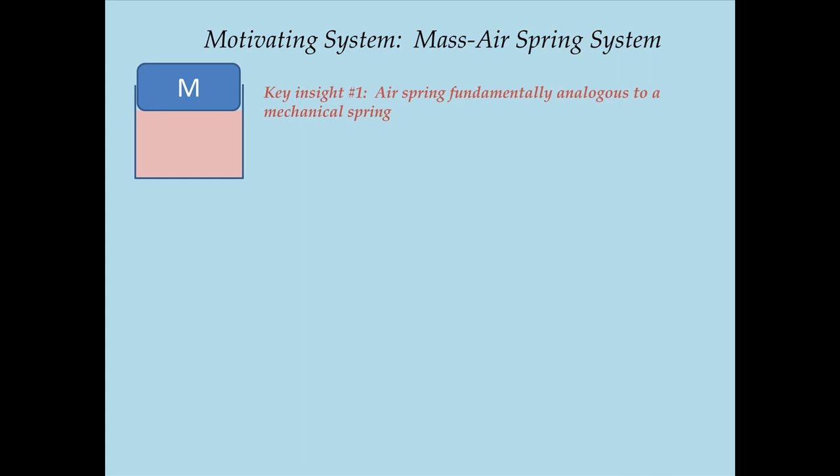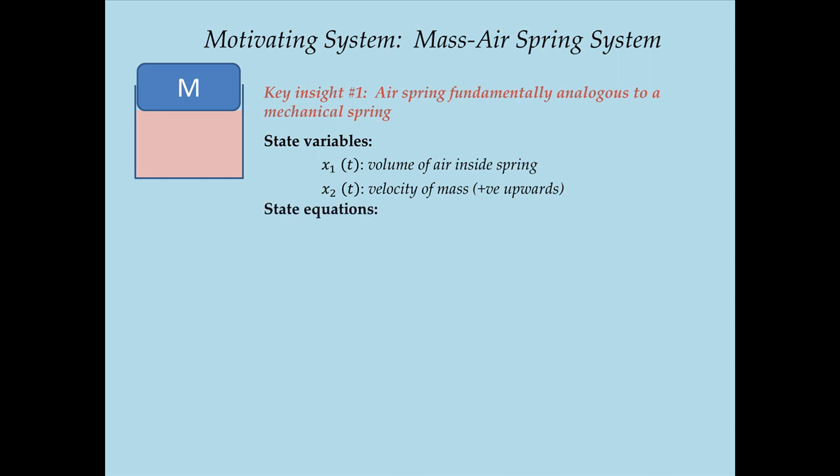It makes sense to have two state variables: one representing the degree to which we compress this air cushion or spring, and one representing the velocity of the mass — essentially representing potential and kinetic energy. I'm going to select the first state variable as the volume of the air inside the spring, and the second state variable as the velocity of the mass, positive upwards. The first state equation is relatively easy: the rate of change of volume equals the cross-sectional area A of the cylinder multiplied by velocity, so X1 dot equals A times X2.